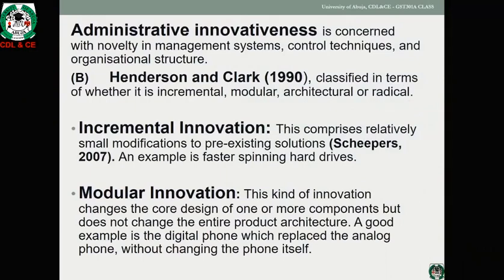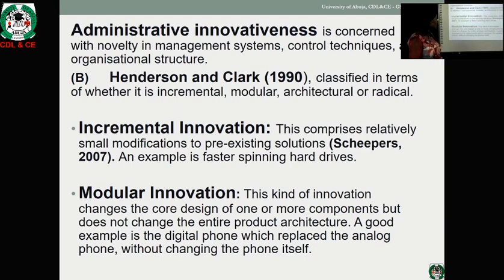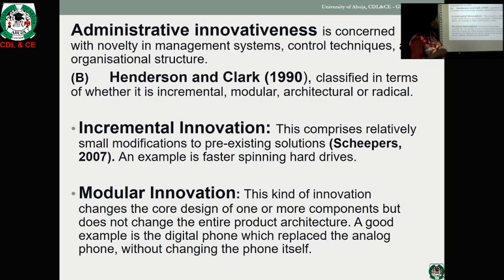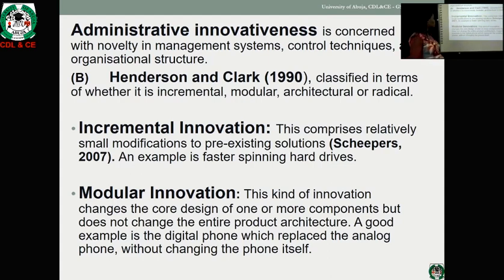Edson and Clark in 1990 classify innovation in terms of whether it is incremental, modular, architectural, or radical. We are going to look at each of these as propounded by Clark and Henderson in 1990. Incremental innovation comprises relatively small modifications to pre-existing solutions. Kaplan in 2007 gives an example such as faster spinning hard drives, which has to do with information technology.